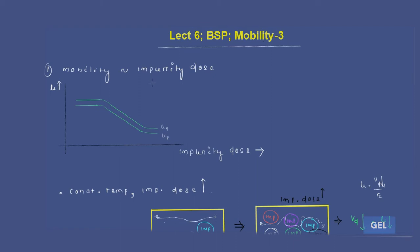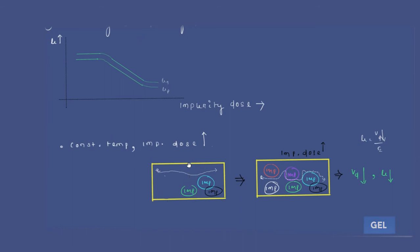The first graph we are going to learn is the mobility versus impurity dose graph. Look at the diagram first — as we increase the impurity concentration, the movement of electrons gets increasingly affected. As the impurity dose is increased further, the electron movement is more and more disrupted.